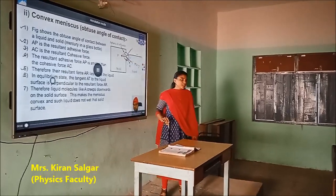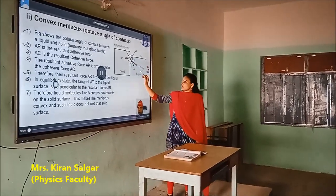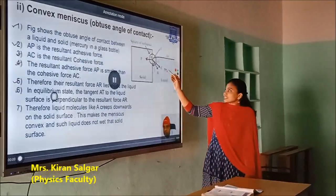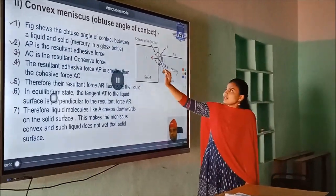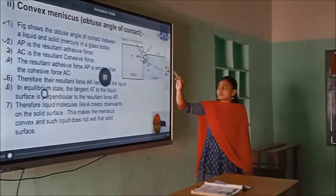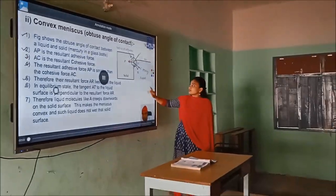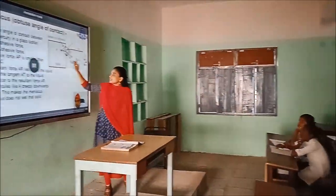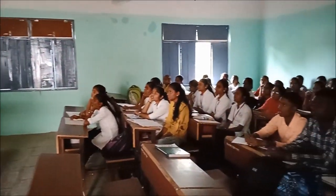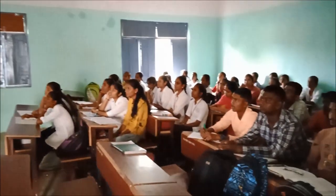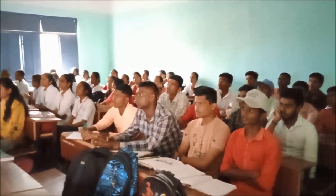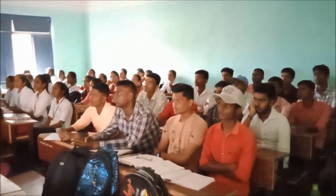The container holds liquid mercury. Its angle of contact is an obtuse angle — greater than 90 degrees. Let's see our figure, which shows the obtuse angle of contact.